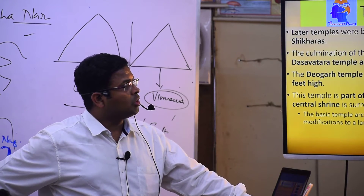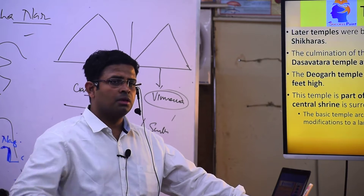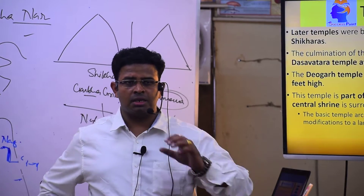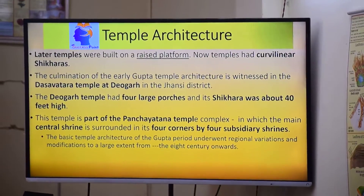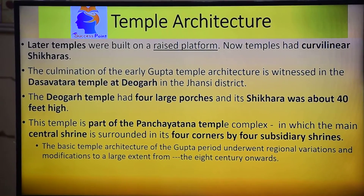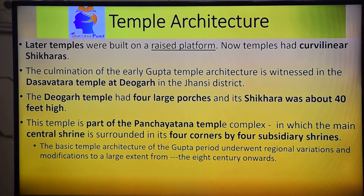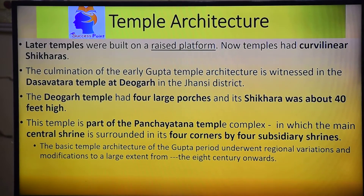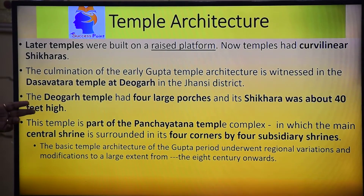Later temples were built on raised platforms — slowly and gradually the platforms started rising. These temples had a linear Shikhara, not curvilinear. The culmination of early Gupta temple architecture is witnessed in the Dasha Avatar Temple at Devgarh in Jhansi, a famous Vishnu temple. This temple represents the peak of the Gupta period, when Nagara temple architecture fully developed, featuring a Shikhara at the end.